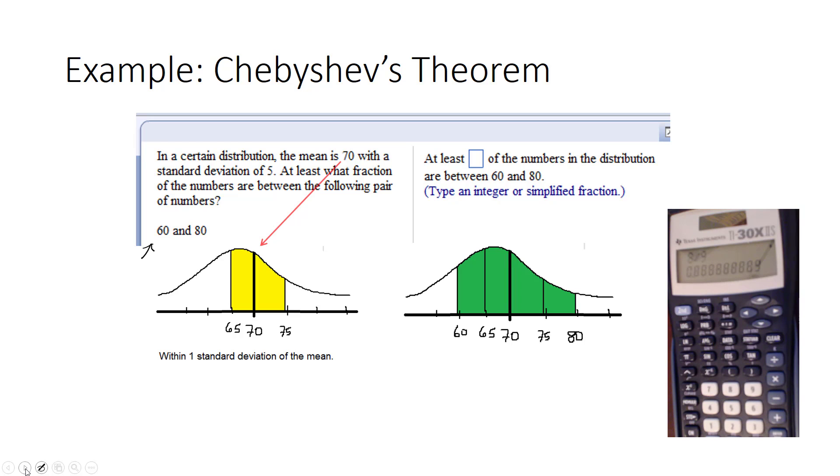So once again, 70 is in the middle, and we go out by 5 because we know 5 units is one standard deviation. And we see that if we go out 5 twice, we're to 60 on the left and 80 on the right. So this green portion represents all the data within two standard deviations of the mean. So what they're really asking us is at least what fraction of the numbers are within two standard deviations of the mean.